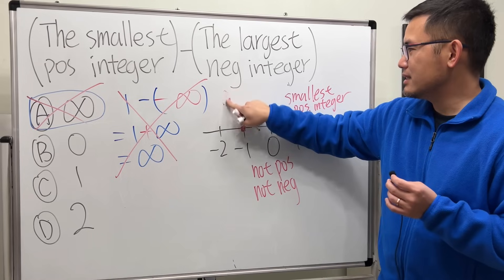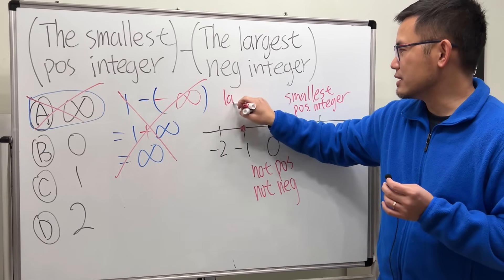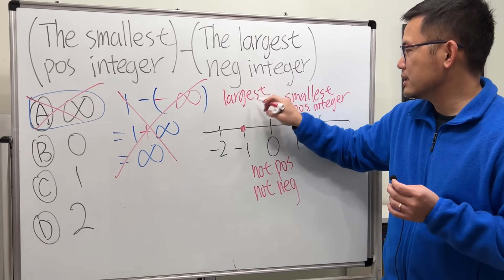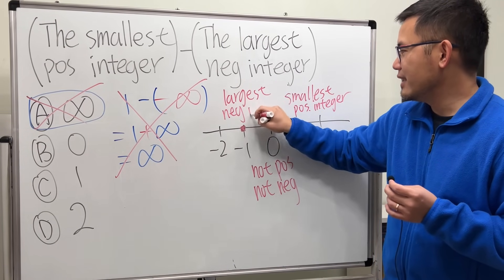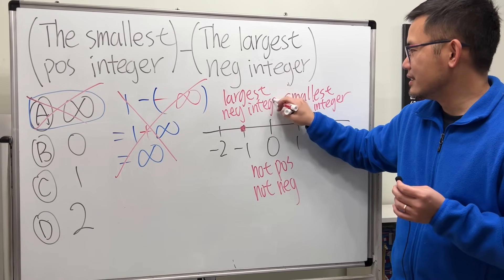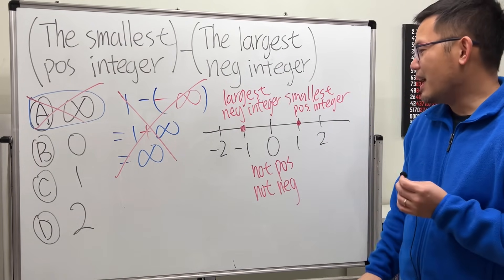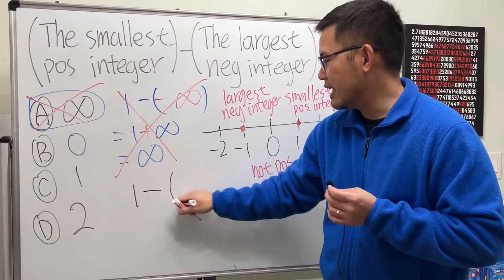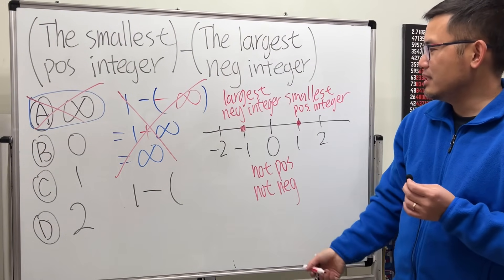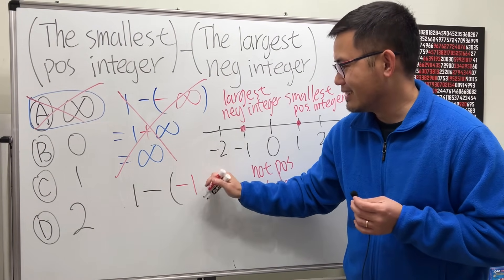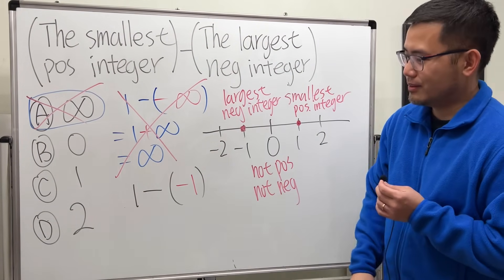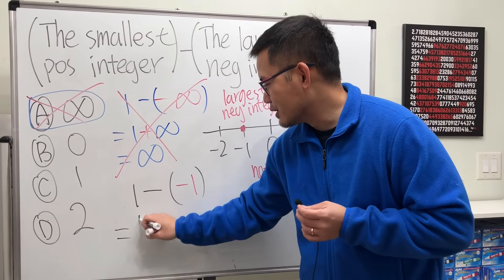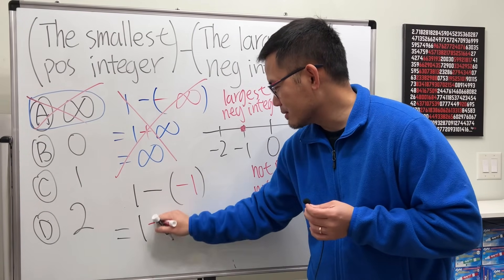So right here, this is the largest negative integer. So in fact, what we are doing is just one minus negative one. So that's what we're doing, and then just work it out. This is just one, negative times negative becomes plus.